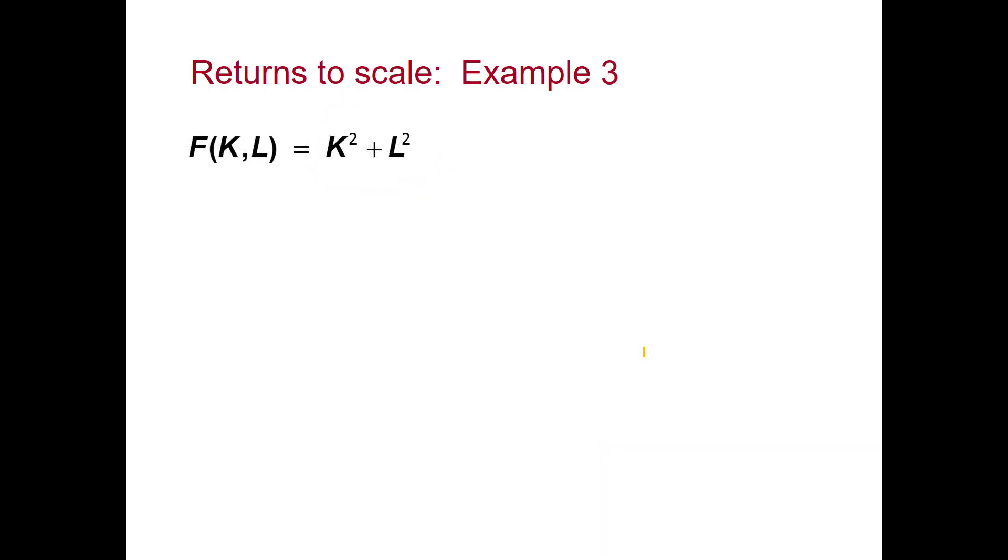This is our third example. Our production function this time is K squared plus L squared. Once again, we increase both capital and labour by a factor of Z.